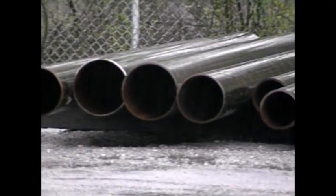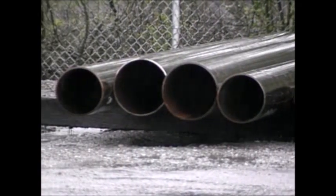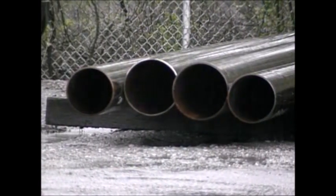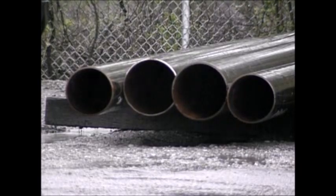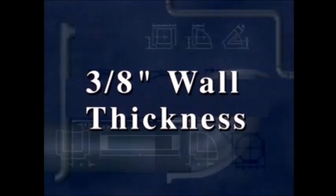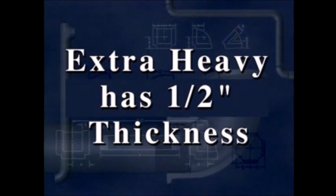For pipe that is larger than 12 inches in diameter, standard wall thickness is not a schedule, but means 3/8 of an inch wall thickness, whatever the OD. Likewise, extra heavy or extra strong pipe has 1/2 inch wall thickness, whatever the OD.